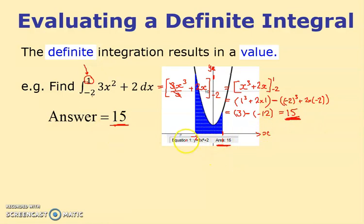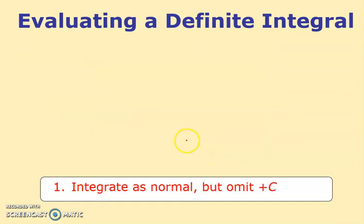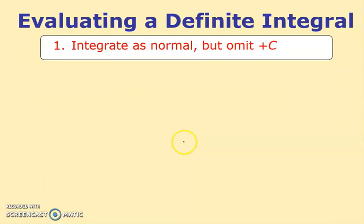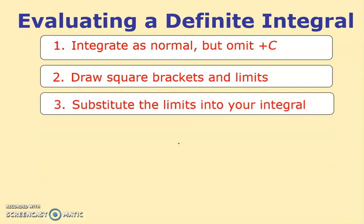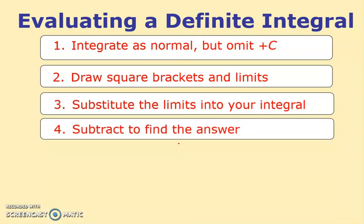Here's the rule: when evaluating a definite integral, you integrate as normal but do not put plus c. Instead, draw square brackets and add the limits. You then substitute those limits into your integral and subtract one result from the other to get your final answer. I suggest you write these four steps down — this is what we're going to do on all questions where there's a definite integral.